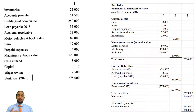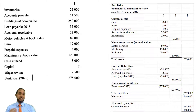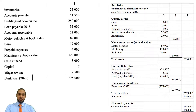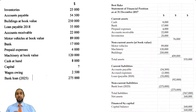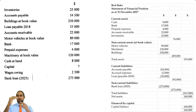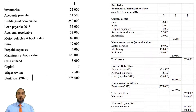I kind of prefer this particular format because they did not give us the capital figure in the question. To figure out capital is simply assets minus liabilities. But I know some of you have been trained to do assets on top and capital plus liabilities below, so we are going to take a look at that format now.